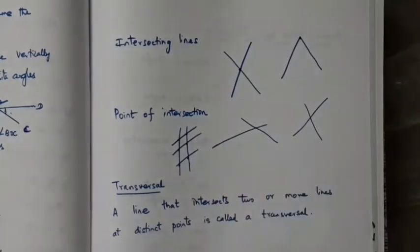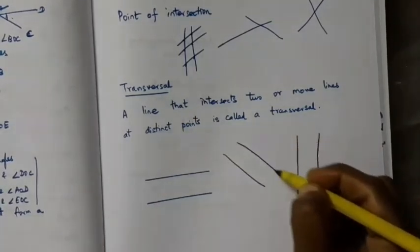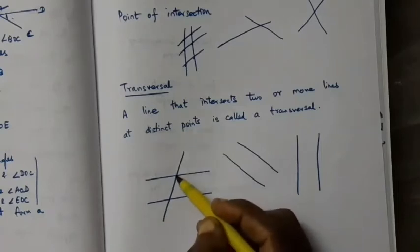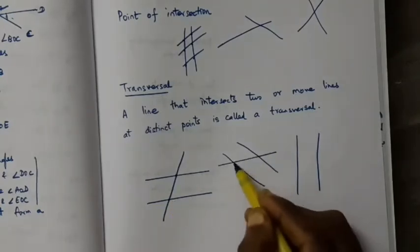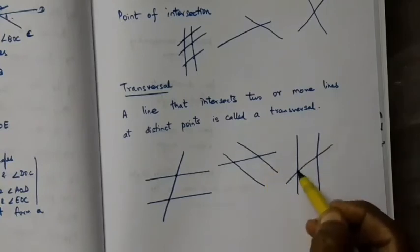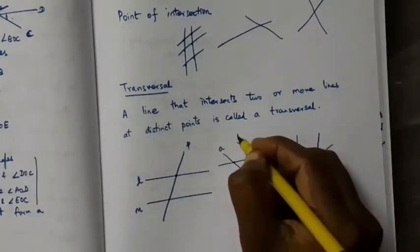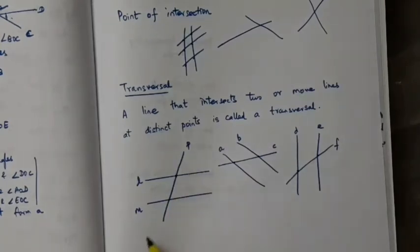Then what is called a transversal? A line that intersects two or more lines at distinct points is called a transversal. I have two lines here and another line meeting these two lines at two different points. If this line is P, and these lines are L and M, what can I say? P is a transversal.